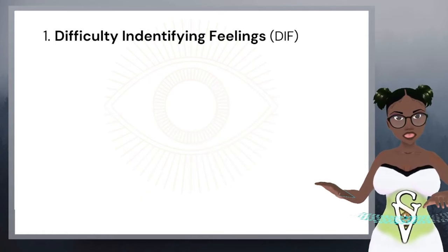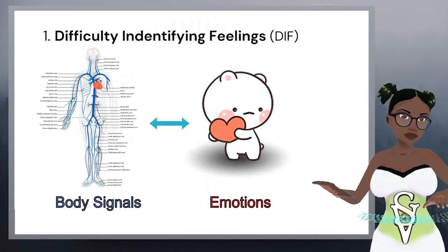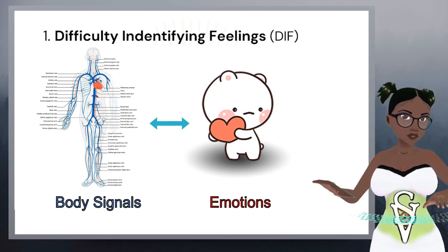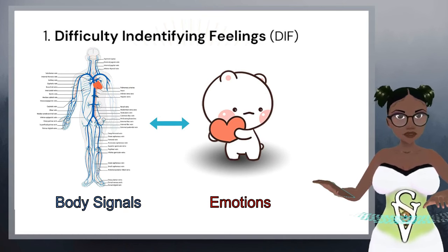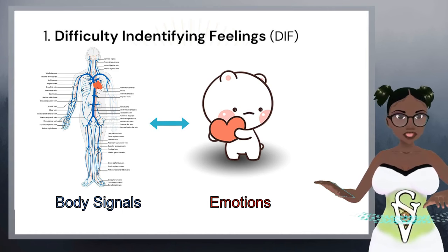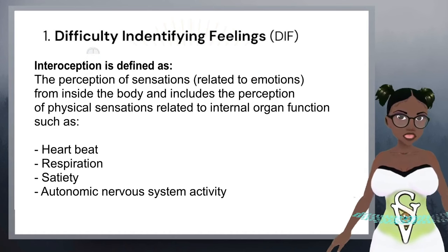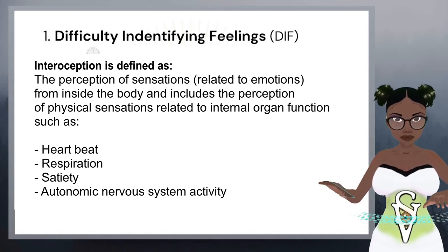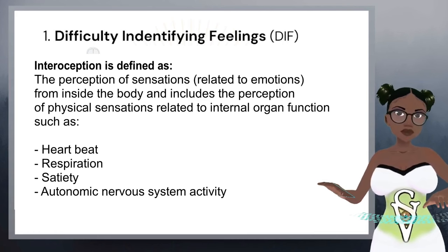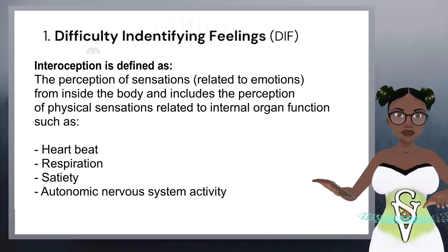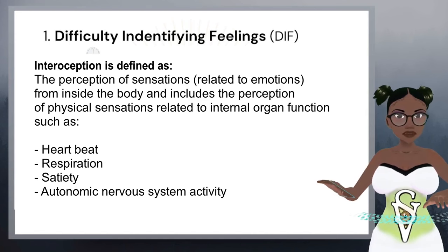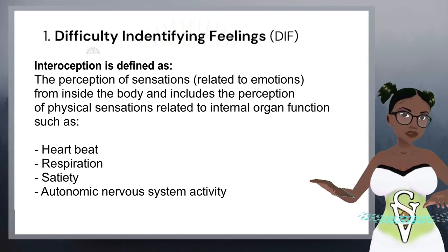On a more physiological level, research has found that body signals are connected to emotional experience. People who experience alexithymia tend to lack the ability to produce, detect, or interpret the physical changes that are required for the experience of emotion — mainly because of not being able to be fully in touch with their body. There's a process called interoception which people with alexithymia have been found to be low on. Interoception is defined as the perception of sensations from inside the body, including the perception of physical sensations related to internal organ functions such as heartbeat, respiration, and satiety.